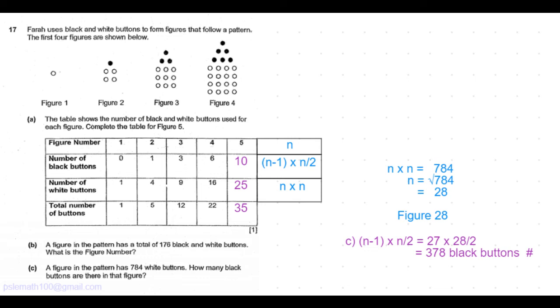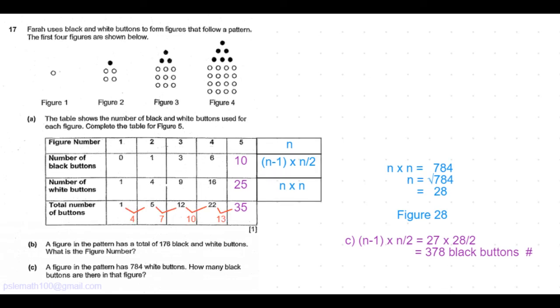We see that figure 1 to 2, the increase is 4. Figure 2 to 3, the increase is 5 to 12, which is 7. Figure 3 to 4 is 12 to 22, which is 10. And figure 4 to 5, the increase is 13. So we see that the increase itself is increasing by 3.